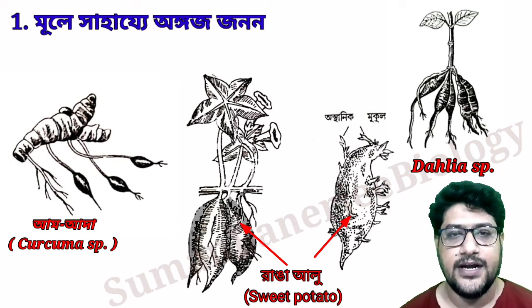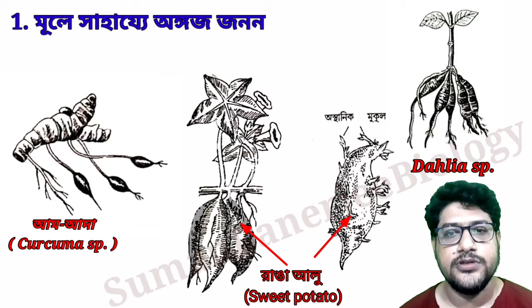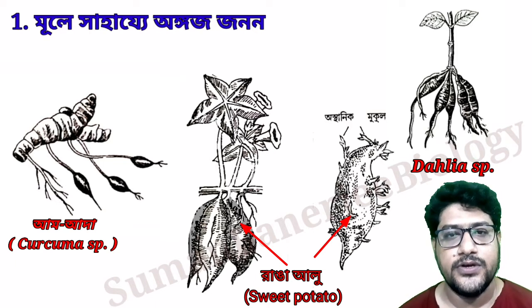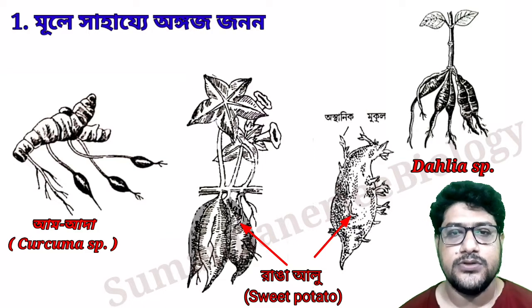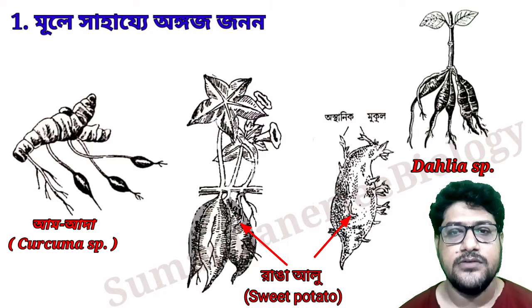উপরের ছবিতে দেখতে পাচ্ছো রাঙা আলুর ছবি, যেখানে রাঙা আলুর মূল থেকে অপত্য উৎপন্ন হচ্ছে এবং খাদ্য সঞ্চয় থাকায় তা ফুলে উঠেছে।